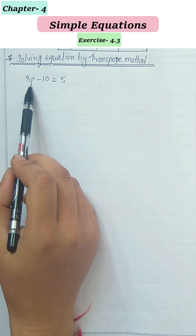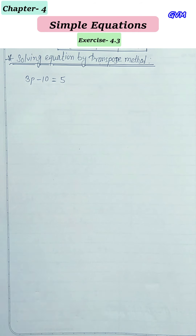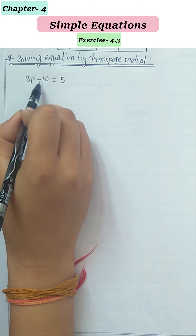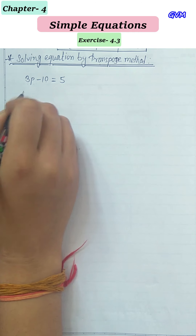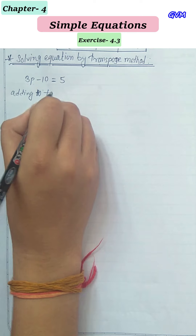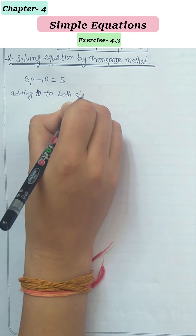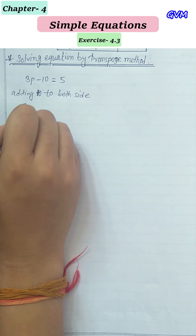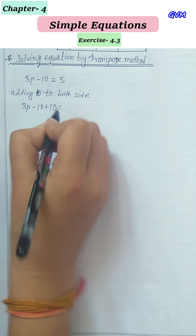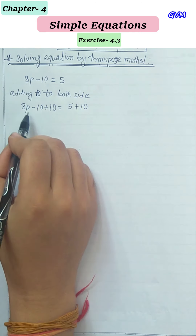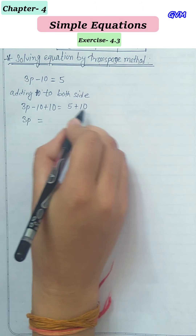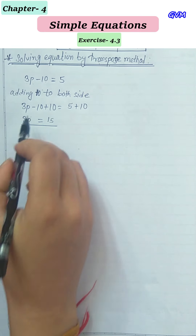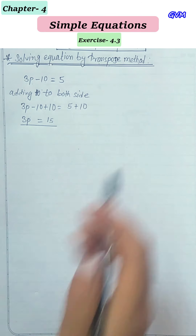When we have a variable with addition or subtraction of some number, we will use the transpose method. Let's see how it works. We have 3p − 10 = 5. Earlier, we were adding 10 to both sides: 3p − 10 + 10 = 5 + 10, which gives 3p = 15. Then we would solve by dividing by 3.